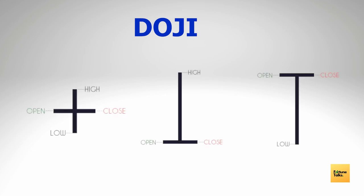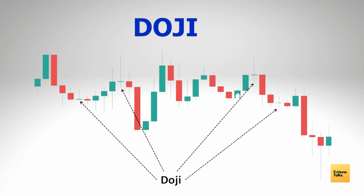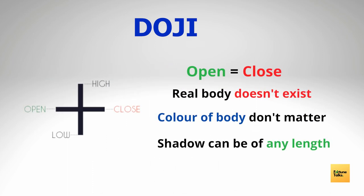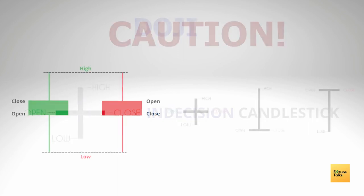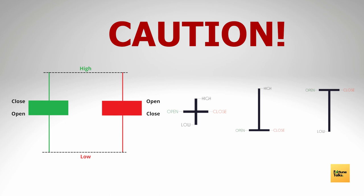Finally, let's talk about dojis. Dojis are similar to spinning tops except they do not have a real body — the open and closing prices are equal. The doji is an important candlestick pattern as it provides crucial information about market sentiment. By textbook definition, the open price should equal the close price, meaning the real body does not exist. The upper and lower wicks can be of any length and the color doesn't really matter. Dojis have similar implications to spinning tops — they convey indecision between bulls and bears — and both dojis and spinning tops ask the trader to remain cautious in the market.